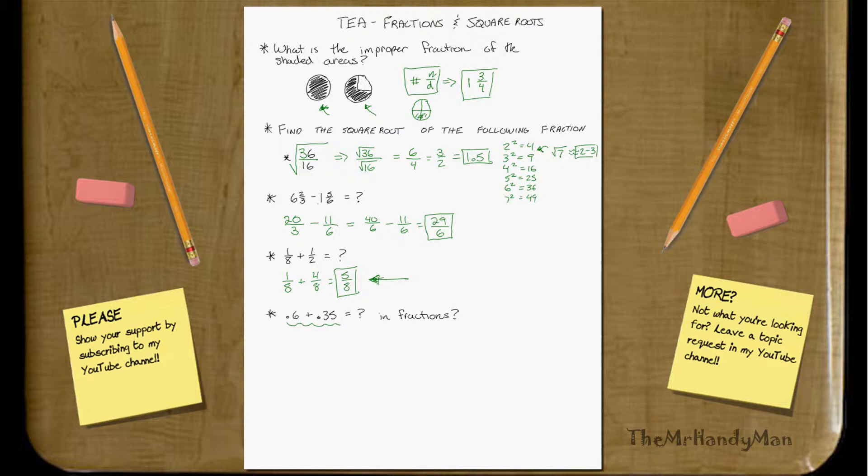But, you'll notice that .6 plus .35, if we just do the math, .6 plus .35, that equals .95. Well, now we've got to bring that back to a fraction. We know that a percent, 1%, is equal to 1%, so per 100.